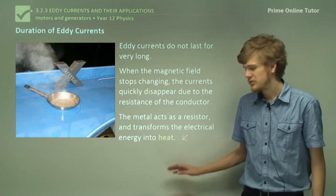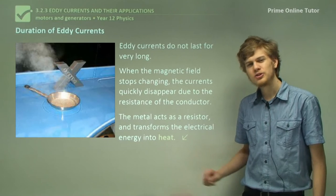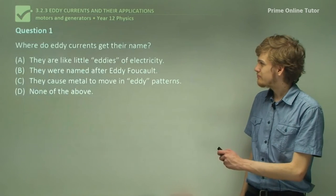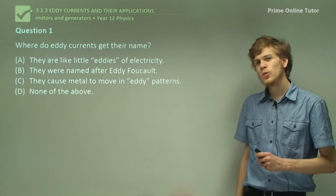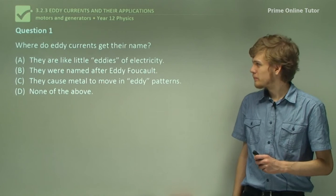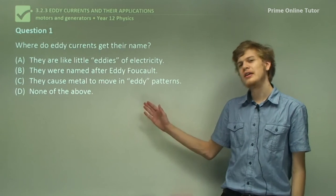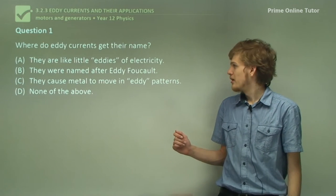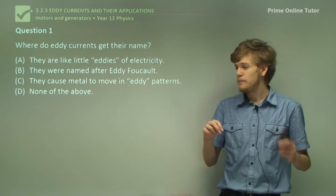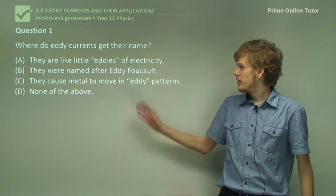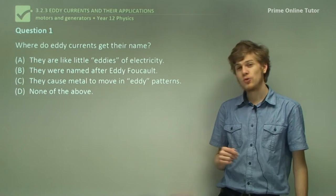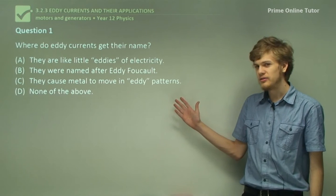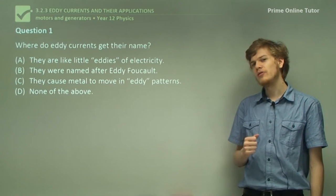For now though, that's the end of the theory, so we can go on to some questions. Question 1: Where do eddy currents get their name? Are they like little eddies of electricity? Were they named after Eddy Foucault? Do they cause metal to move in eddy patterns? Or is it none of the above?